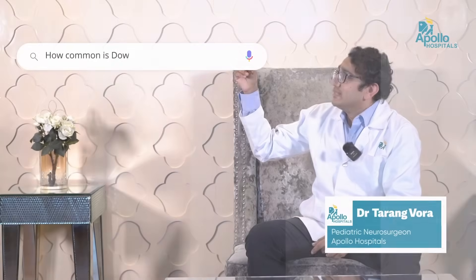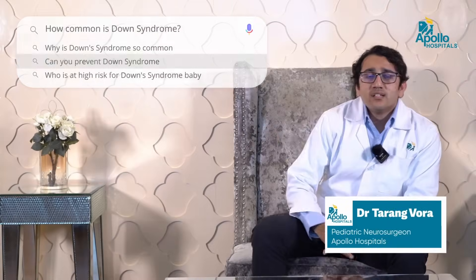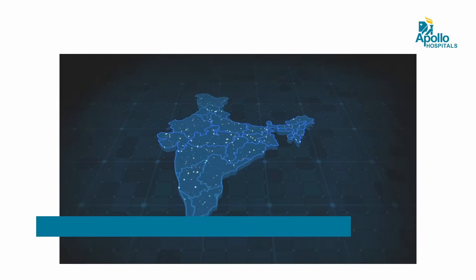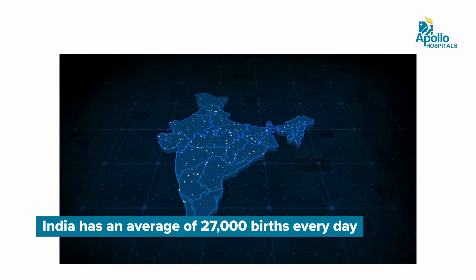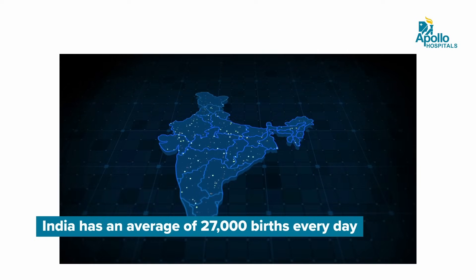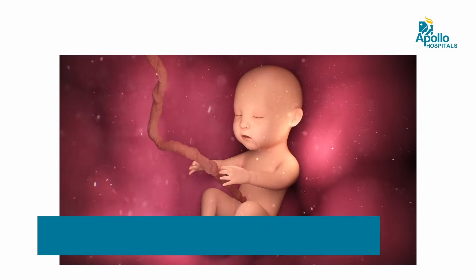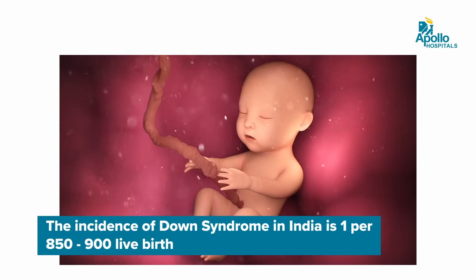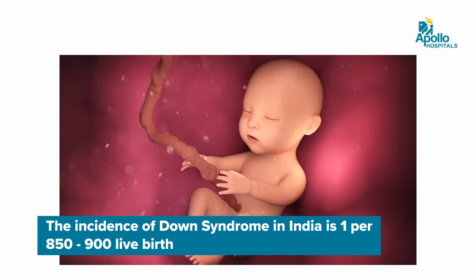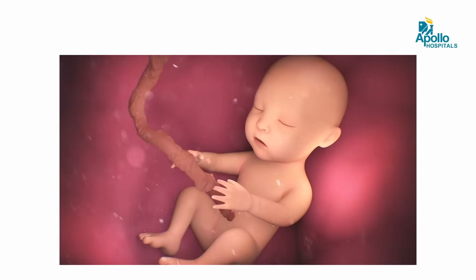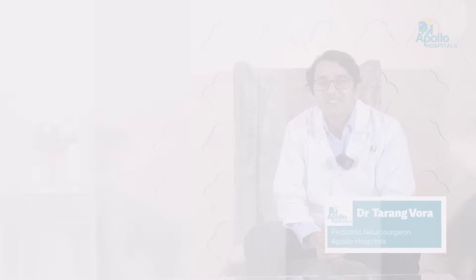How common is Down syndrome? So in India, on an average 27,000 babies are born per day. One in each 800 babies that is born has a probability of getting Down syndrome. So we are looking at around 70 to 80 babies born per day with Down syndrome. That is how common it is.